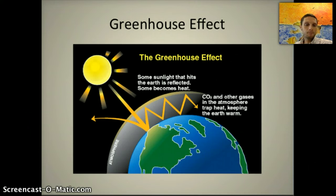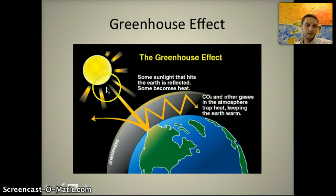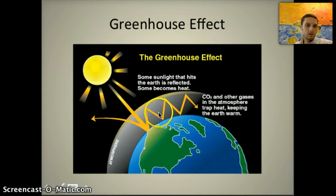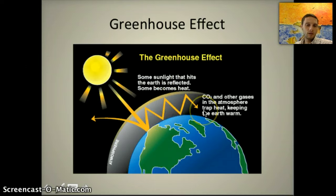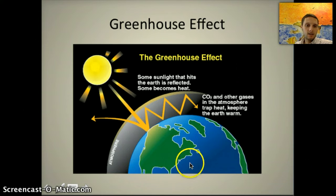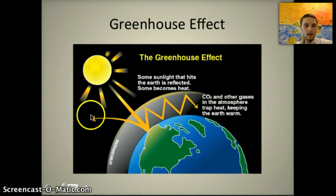A greenhouse is oftentimes very warm inside — kind of the same idea here. The atmosphere that surrounds the Earth helps to trap some of the sunlight from the sun, and in doing so that warmth bounces back to Earth, helping to create a stabilized and warm temperature. The sunlight warms up the sea and the land, some of that light gets radiated back towards space, and a lot of that heat gets trapped here.